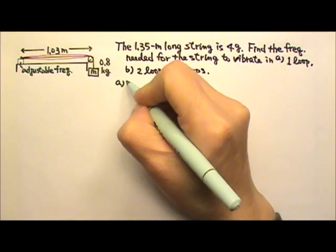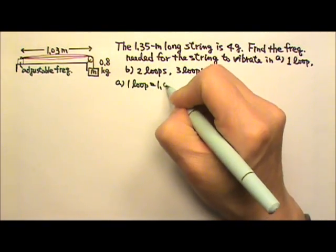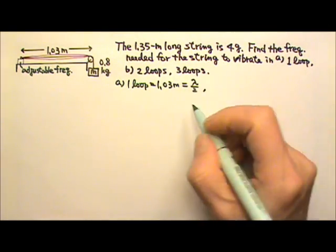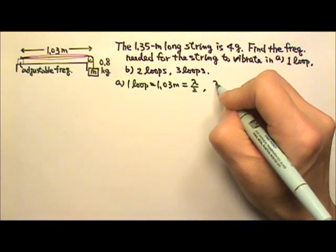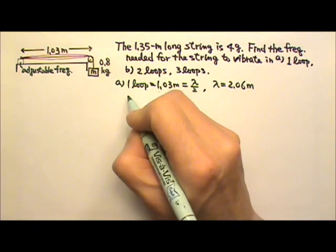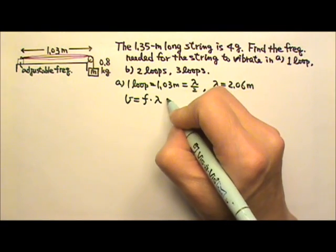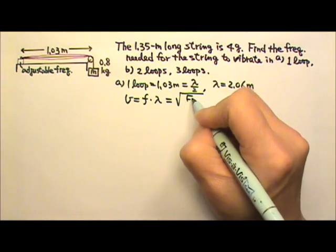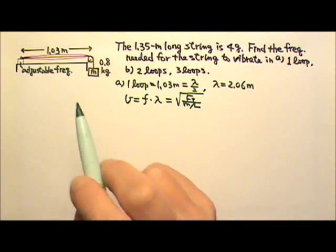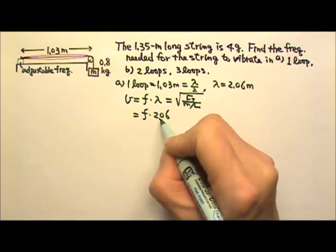For part A, one loop is 1.03 meters long, and one loop is also half a wavelength. This means the wavelength is 2 times 1.03, which equals 2.06 meters. We know that the speed of a wave is frequency times the wavelength. We're looking for the frequency, and the wavelength is 2.06.